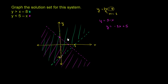We want everything below the line. You can verify by testing (0, 0): 0 is indeed less than 5 minus 0, so 0 is less than 5 — that works. Testing (0, 10): 10 is less than 5 minus 0 doesn't work. So the solution is everything below the line.